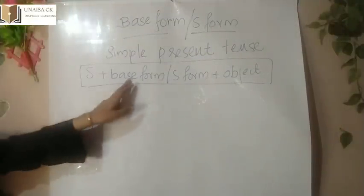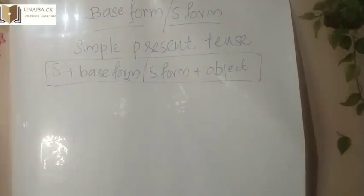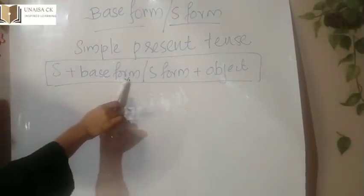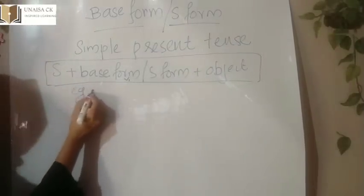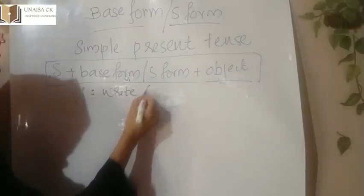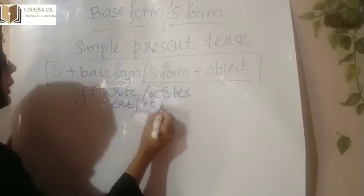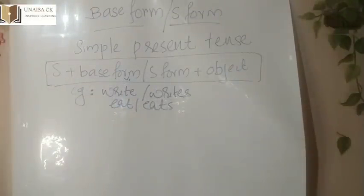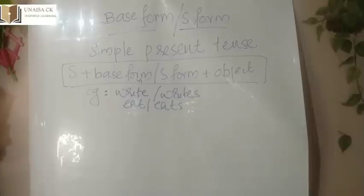We need to use base form. Base form means verb one — V1. All of you know that; that is the base. We form all other forms of verbs from this base form, so this is called base form. The structure is V1 or S form plus object. For example: write or writes, eat or eats. We feel confused whether we need to use 'eat' or 'eats', or 'write' or 'writes'. I am going to teach you where we use base form and where we use S form.